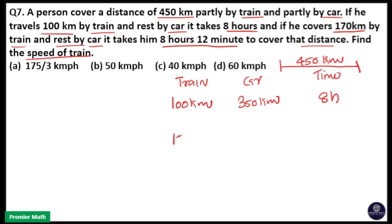If he covers 170 km in train and remaining 280 km in car, he takes 8 hours 12 minutes to complete this journey. The time difference between these two journeys is 12 minutes.